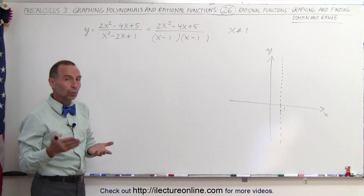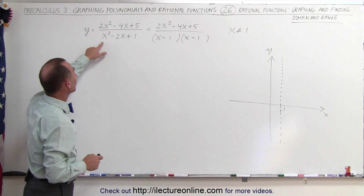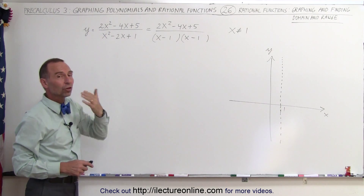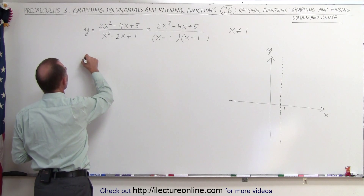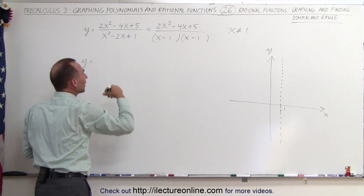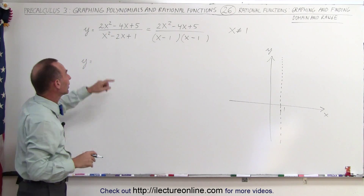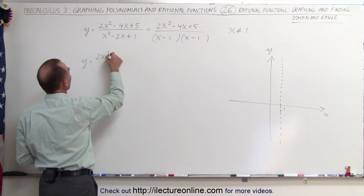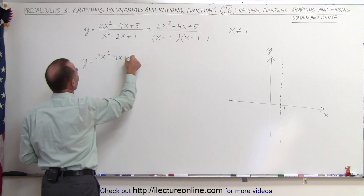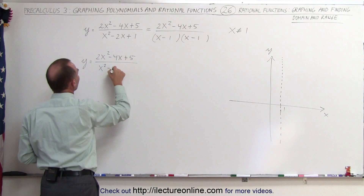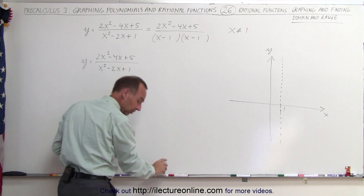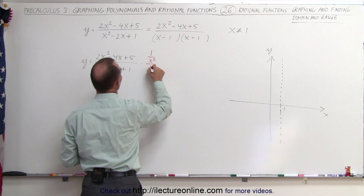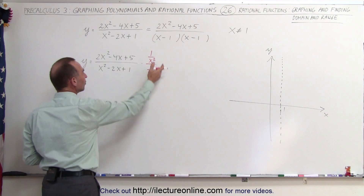Now to find the horizontal asymptote, notice that we have x squared in both the numerator and denominator — the same largest exponent. The technique is to multiply both numerator and denominator by 1 over x squared, since x squared is the largest exponent we have. This is equivalent to multiplying by 1, so we are not changing the function at all.